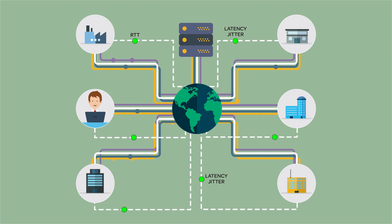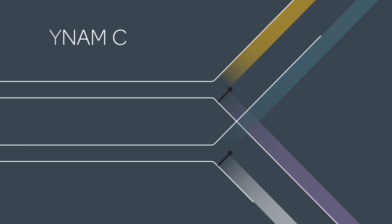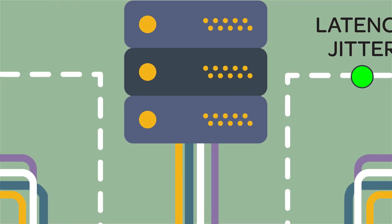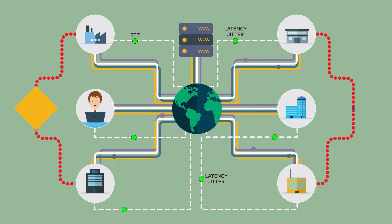The SD-WAN function will monitor each access line and application performance and send information back to the orchestrator. If the network link performance changes, the SD-WAN function will change the application path dynamically to a better performing link. Furthermore, NTT Communications' SD-WAN can be logically service-chained with other critical network functions such as security and application acceleration services.